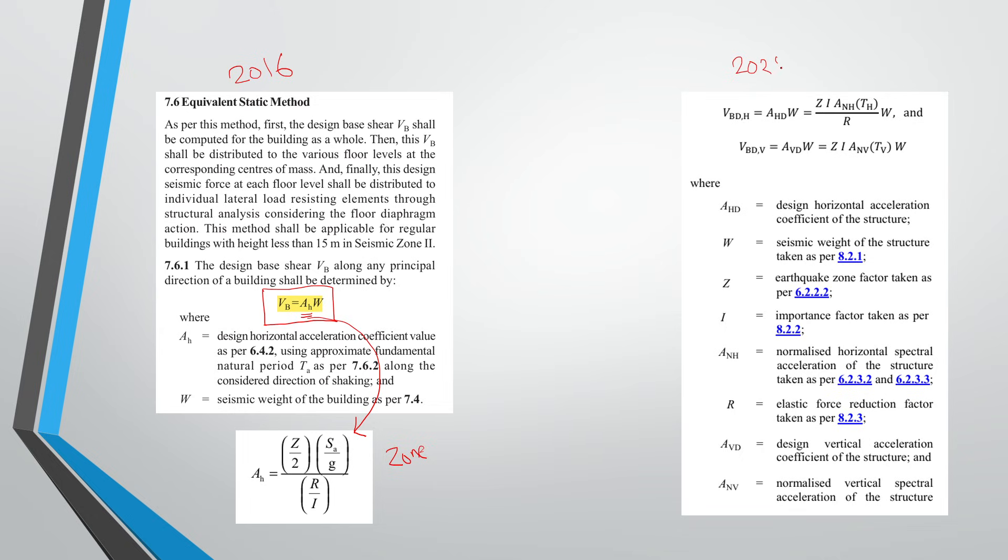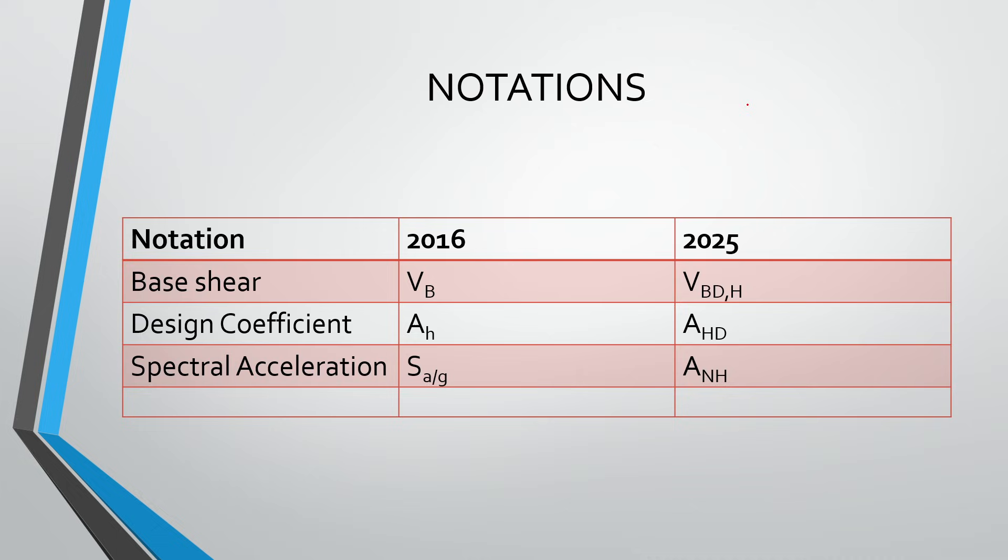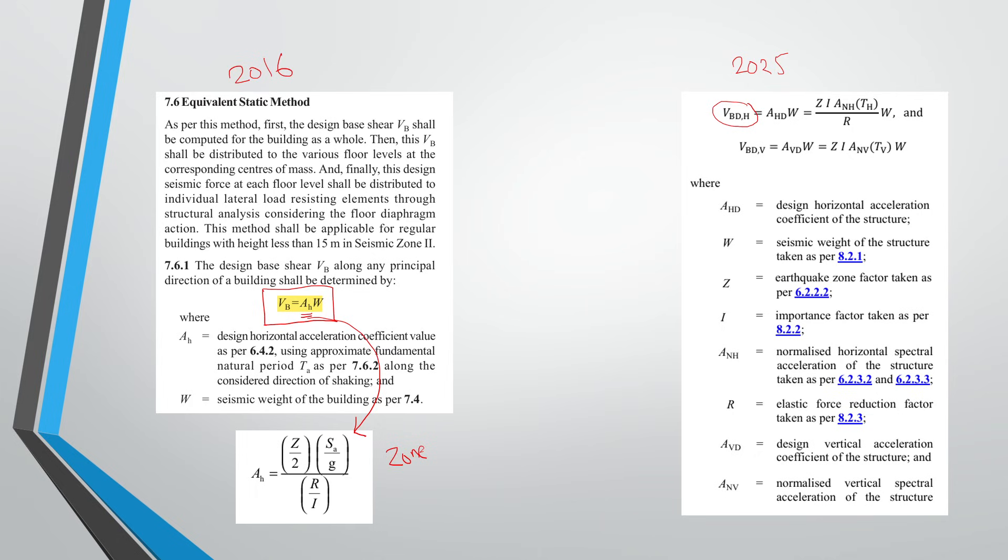As per 2025, VB now becomes VBDH. So here I have collected some notations as per 2016 and as per 2025. The base shear previously was VB, now it has become VBDH, that is design base shear.